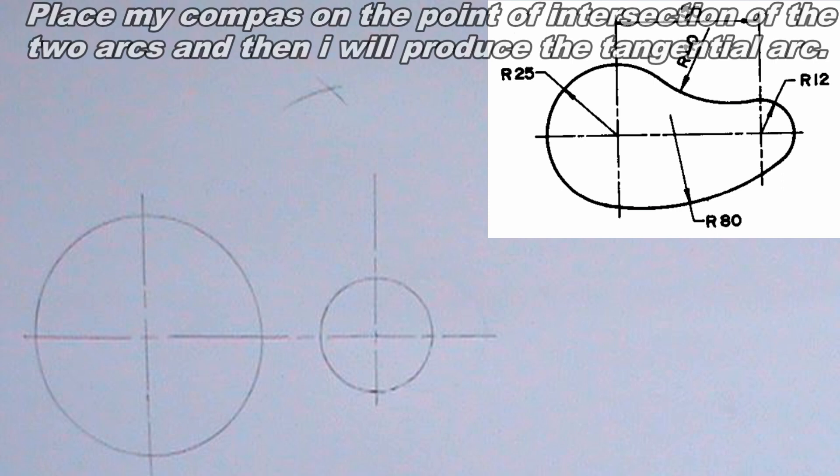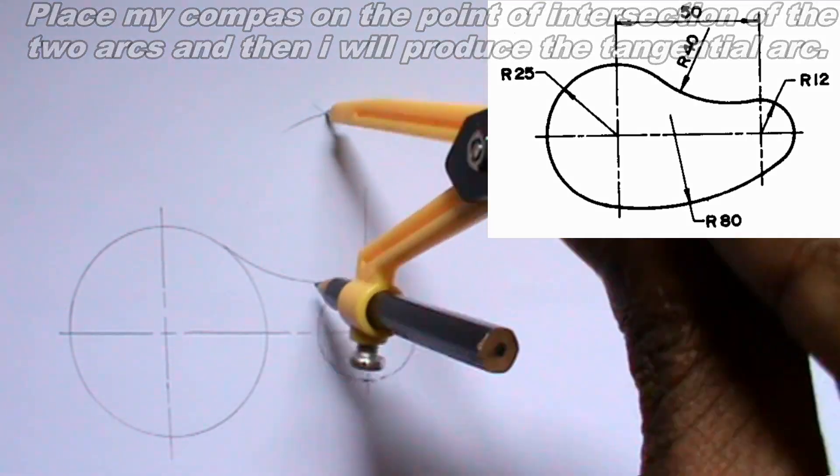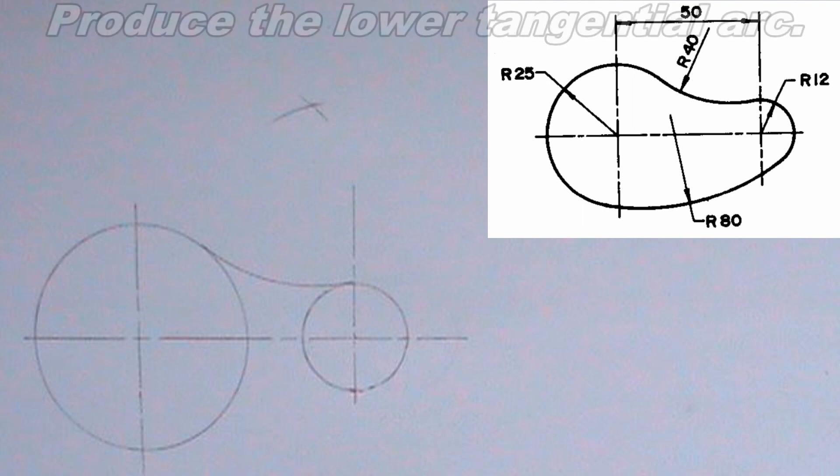I will place my compass on the point of intersection of the two arcs and then I will produce the tangential arc. I will also produce the lower tangential arc. The lower tangential arc can be produced this way.